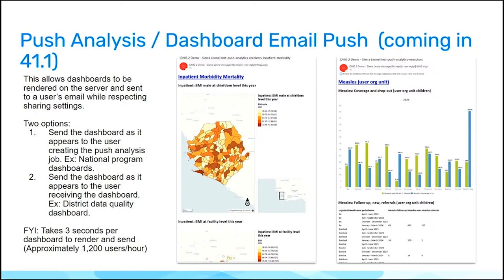The other option is if you want the user who receives the dashboard to have the data displayed on the dashboard reflect that user's permissions within DHIS2. Imagine the scenario: I am, again, still the national DHIS2 system administrator, but I am making a district-level dashboard, and I want this sent out to all of the district health managers. Using the second option, I can make a national dashboard using relative org unit assignment on that dashboard, and the user receiving it will see the data that reflects their district.